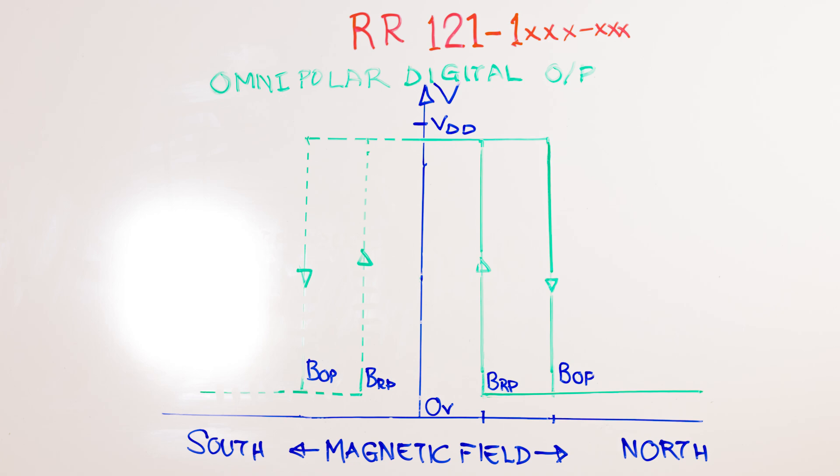When we look at this chart, what we see is at this point, which represents zero magnetic field or a position where the magnet is far away, the output from the sensor remains at a digital high. We say the switch is in the off state.